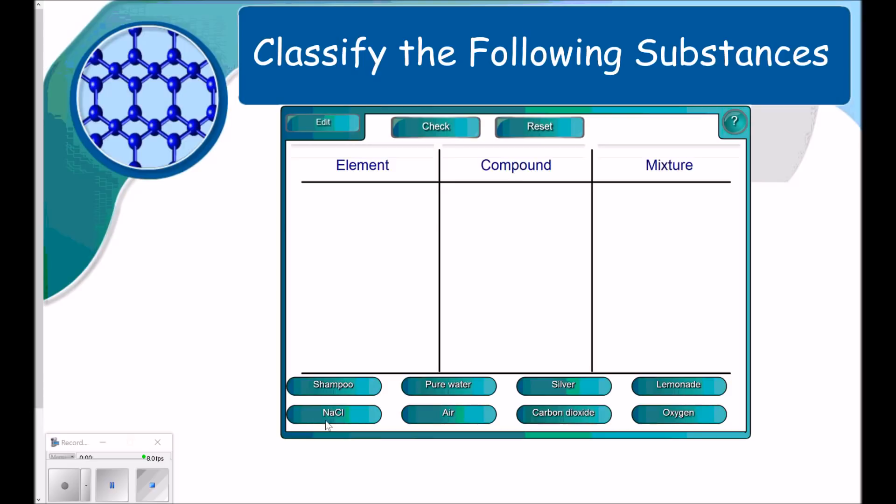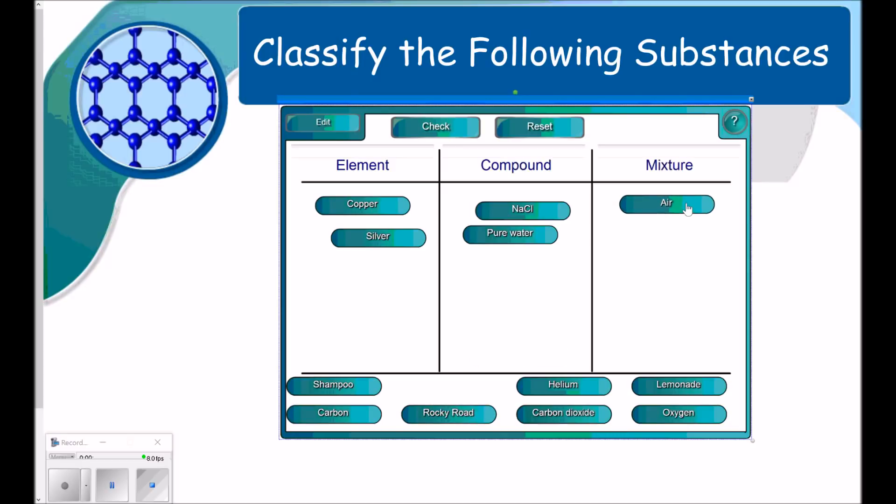So sodium chloride, NaCl. This isn't going to be an element, because I've got two different atoms in this. It's a compound, two different atoms that are bonded together. Pure water. Let's think of what pure water is. It's H2O, so this is going to be a compound as well. When I talk about something like copper, that's just an element. You can find it on the periodic table, all by itself. Same with silver. Things like mixtures are going to be things like air. It's a whole bunch of different elements or compounds that are physically mixed together. Carbon would be just an element.